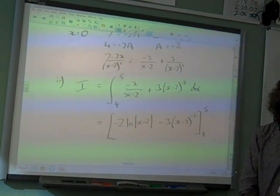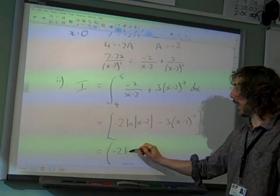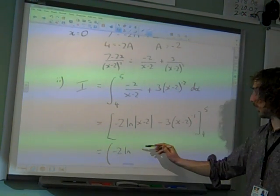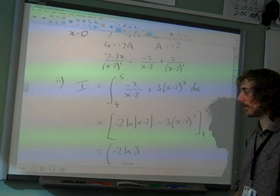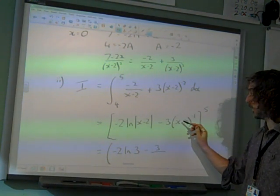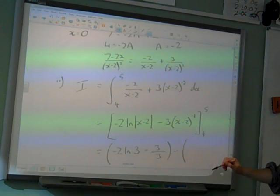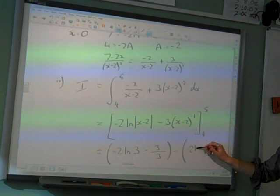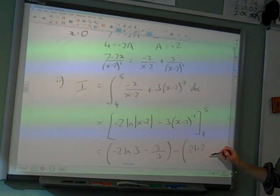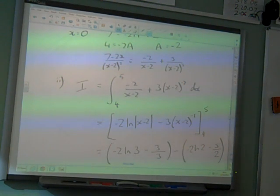So now we're ready to put the limits into this and see what it gives us. We've got minus 2 ln, well what is this? 5 take away 2 is 3. Minus 3 over 5 take away 2 which is 3. And we're taking away minus 2 ln 2 minus 3 over 2. There it is.